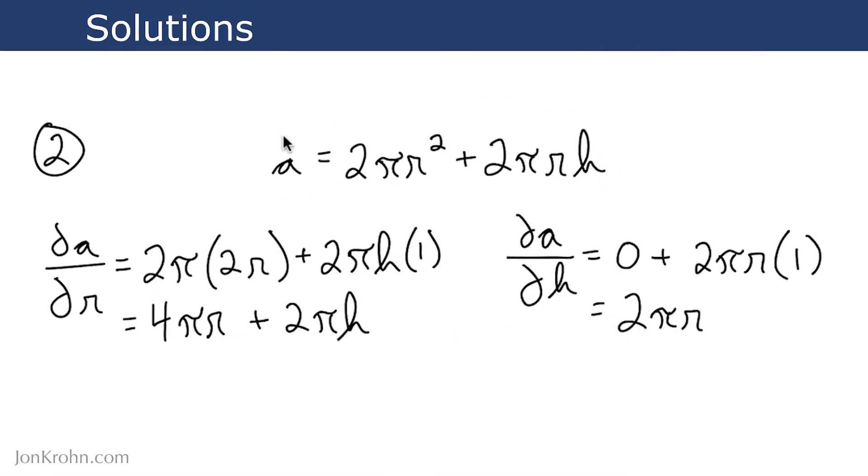For exercise two, we had this equation here. And again, there are two partial derivatives: ∂a/∂r and ∂a/∂h. And the first one, ∂a/∂r, comes out to 4πr plus 2πh. And ∂a/∂h comes out to 2πr.